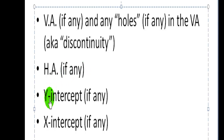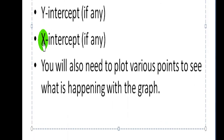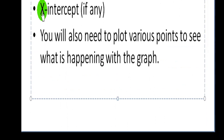Something you don't have to do, but I find to be good policy, is to find out if there's a y-intercept and if there's an x-intercept. Once you have that information, you'll need to plot various points to see the direction the graph is going to take in certain spots, and that will become apparent as we do the example.